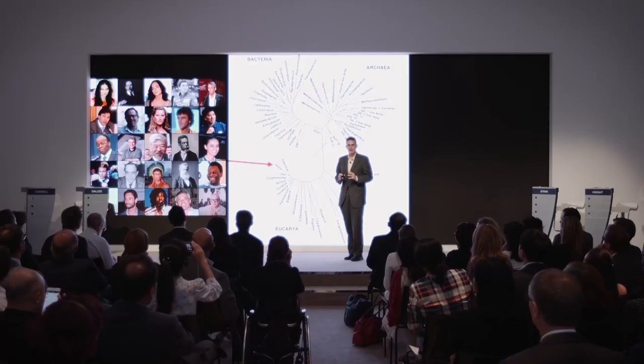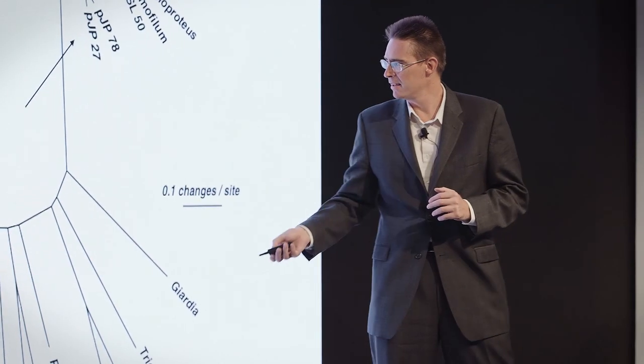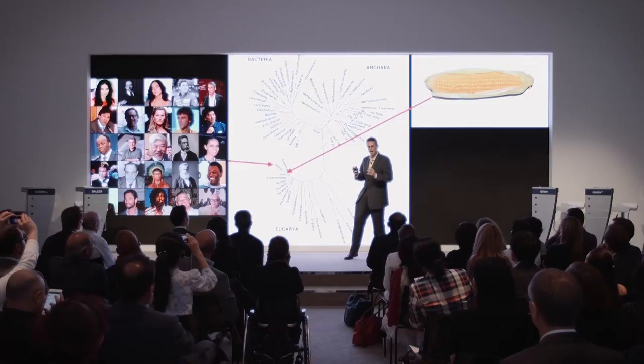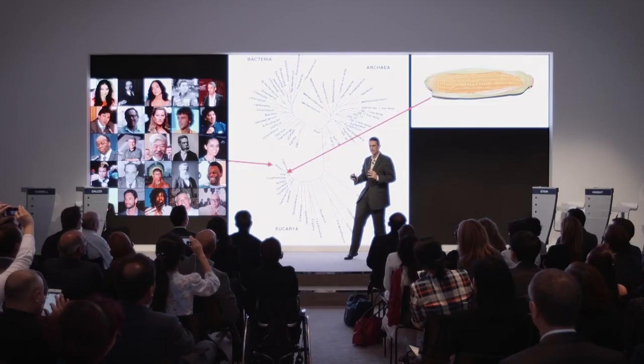You might wonder about the scale of this map. On this scale, this is corn. So if you had corn flakes for breakfast, that's how much of the tree you were covering.